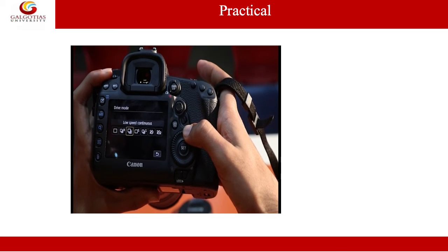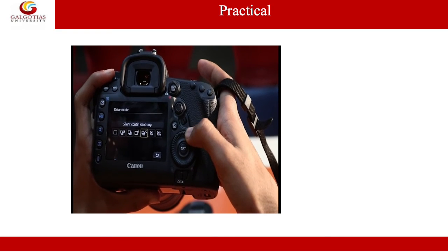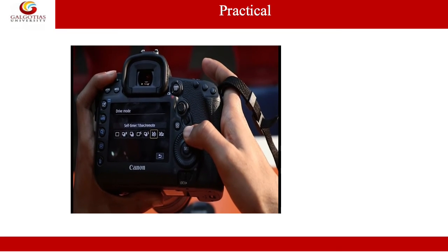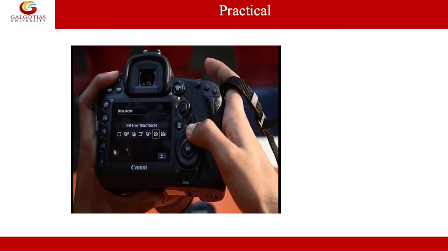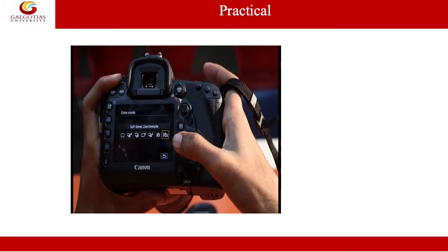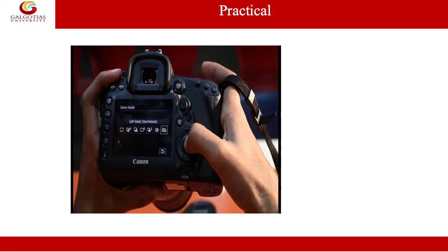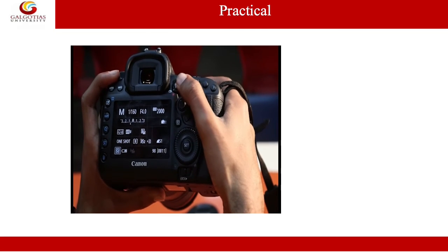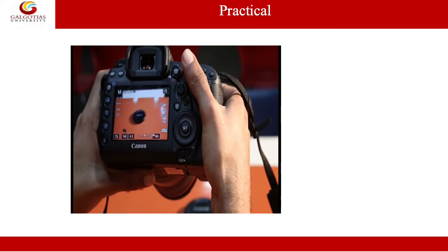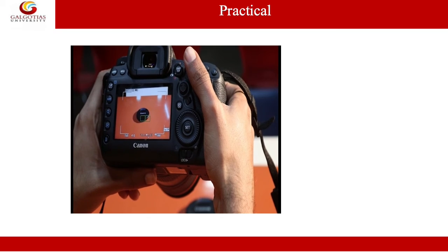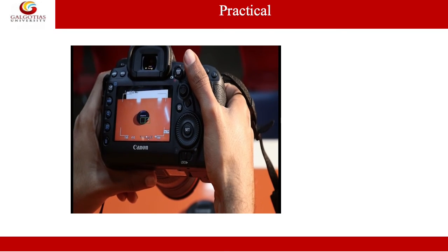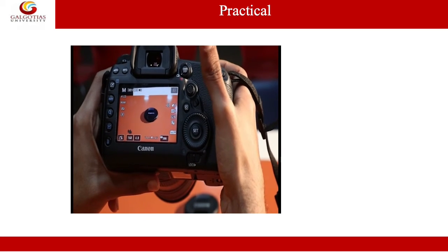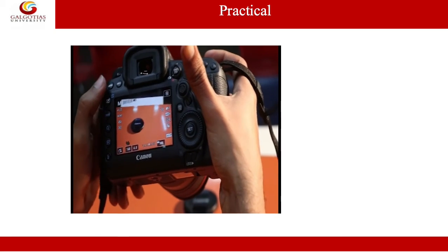There is also a low speed continuous shot mode. You can set the camera on a timer where it will start clicking a photograph after a certain amount of time that you set. For example, if we set the camera on a self-timer of 2 seconds and enable this, when we go to capture the photograph, it will focus the object and capture it after 2 seconds — or after the amount of time you have set.